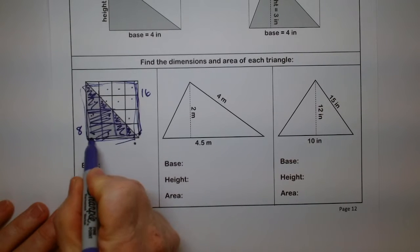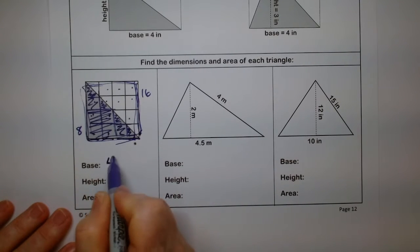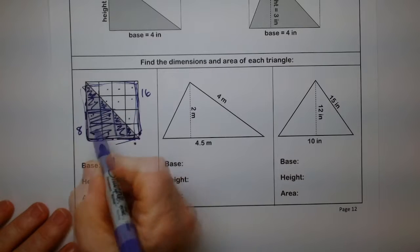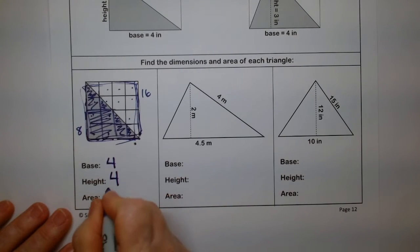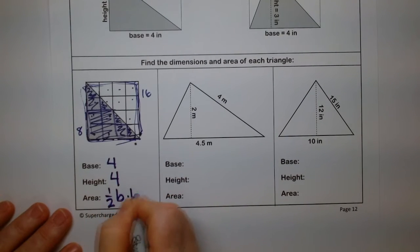So the base here, we can count 1, 2, 3, 4 squares. The height is 1, 2, 3, 4. The area is equal to 1 half the base times the height.